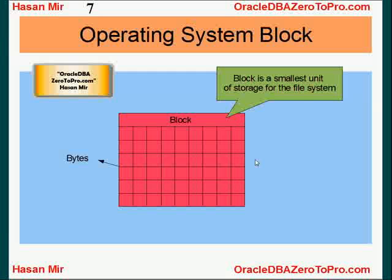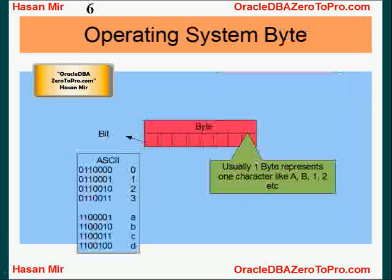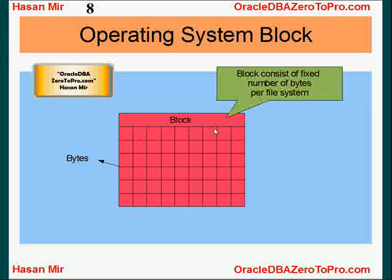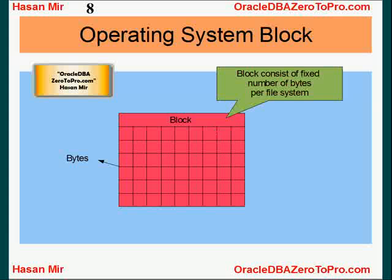A block is a unit consisting of multiple bytes. The significance of a bit is it stores zeros and ones; the significance of a byte is it stores something more meaningful by combining lots of bits. Now, blocks consist of a fixed number of bytes at the operating system level. When you create a file system, you can define at the OS level how many bytes a block will consist of, and this can differ from one operating system to another.